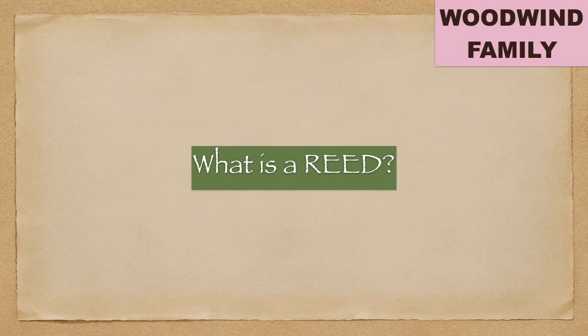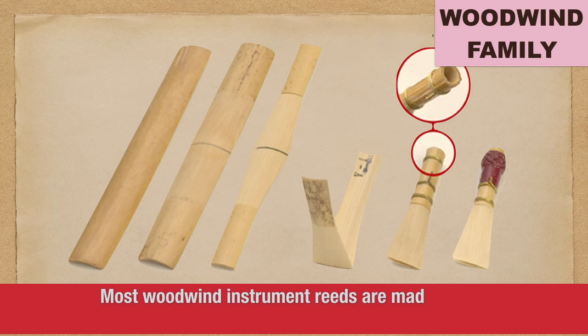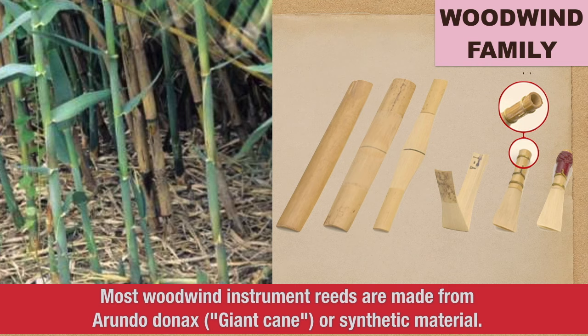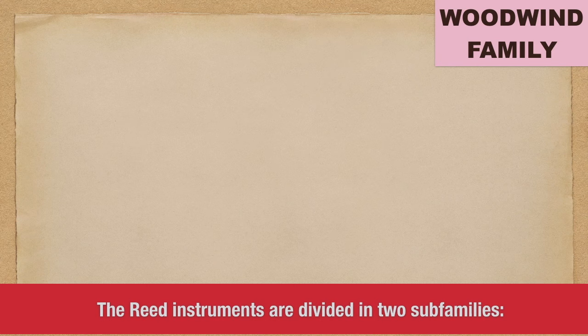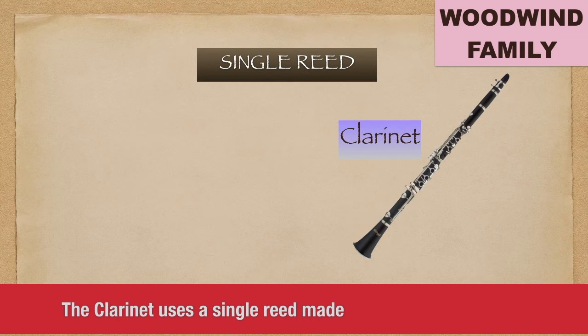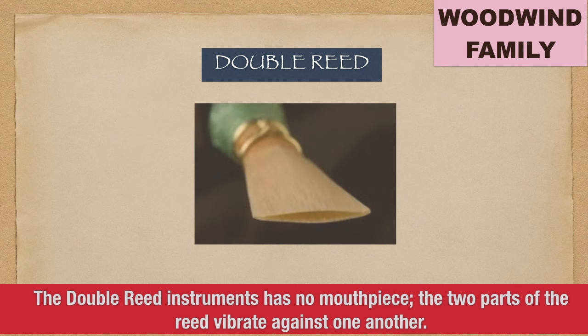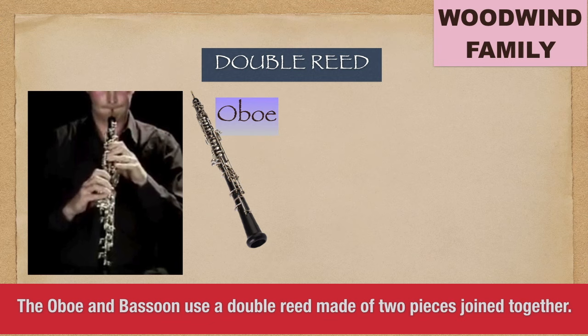What is a reed? A reed is a thin strip of cane material that vibrates to produce a sound on a musical instrument. Most woodwind instrument reeds are made from arundo donax, giant cane, or synthetic material. The reed instruments are divided into two subfamilies: the single reed instruments and the double reed instruments. The single reed instruments produce sound by placing a reed onto the opening part of a mouthpiece; the clarinet uses a single reed made of one piece of wood. The double reed instrument has no mouthpiece — the two parts of reed vibrate against one another. The oboe and bassoon use a double reed made of two pieces joined together.